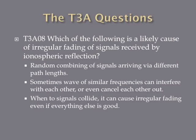Which of the following is the likely cause of irregular fading of signals received by ionospheric reflection? The answer is random combining of signals arriving via different path links. As signals bounce off the ionosphere, waves of similar frequencies can interfere with each other — amplifying or canceling each other out — resulting in irregular fading. If your equipment, feed lines, and antenna are all good but you're experiencing irregular fading, it's likely multipath signal combining.